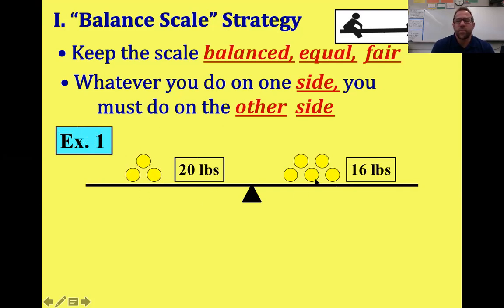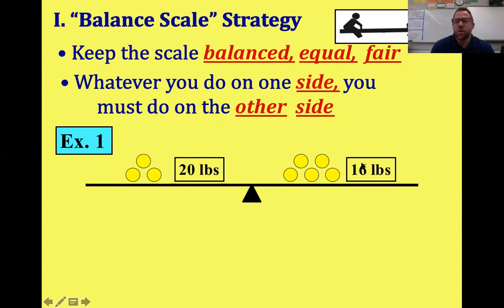Here's our first balance scale example. On the left side we have three nuggets and 20 pounds; on the right side we have five nuggets and 16 pounds. The goal is to find out how much one nugget weighs — all nuggets weigh the same. We start eliminating things but whatever we do to one side we do to the other. Since we only have 16 pounds on the right, we take 16 pounds off both sides.